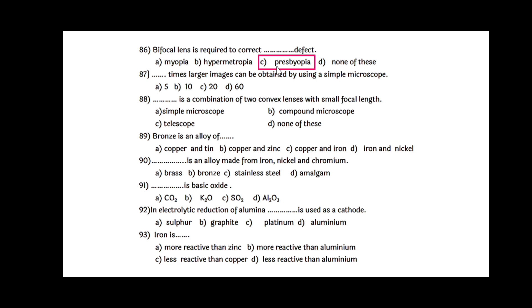As the age goes on, the persons may suffer from presbyopia. 20 times larger image can be obtained by using a simple microscope. Compound microscope is a combination of two convex lenses with small focal length.